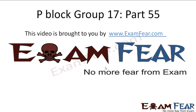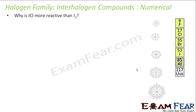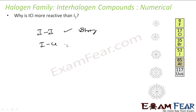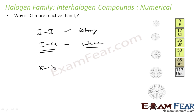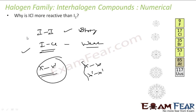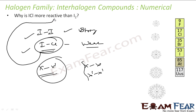Hello friends, this video on P-Block part 55 is brought to you by examfear.com — no more fear from exam. The next question is: why is ICl more reactive than I₂? The I–I bond is stronger than the I–Cl bond. Because the X–X' bond is weaker, the ICl bond is weaker, so this bond breaks easily — making ICl more reactive.